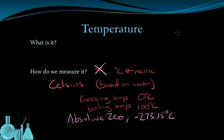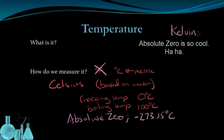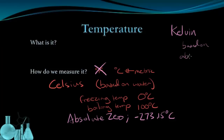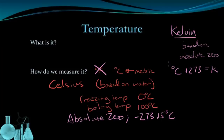Absolute zero is so significant we actually made an entire scale based on it, called the Kelvin scale. Expressing temperatures in Kelvin is going to be very useful when we talk about gas laws. The Kelvin scale is based on absolute zero, and to convert to a Kelvin temperature, all you have to do is take the temperature in degrees Celsius and add 273 to get the Kelvin temperature.